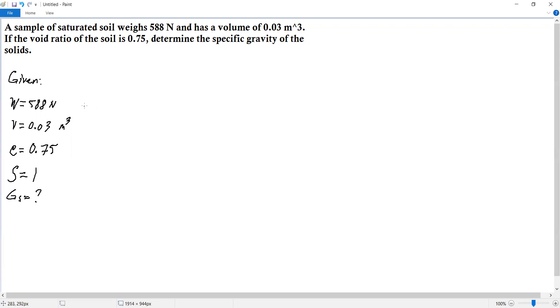First, we'll solve for the unit weight of moist soil. The unit weight of moist or wet is equal to the total weight over volume. We have weight of 588 Newtons and volume of 0.03 cubic meters. Solving using calculator: 588 divided by 0.03 is 19,600 Newtons per cubic meter, or converting to kilonewtons, it's 19.6 kilonewtons per cubic meter. This is the moist unit weight.